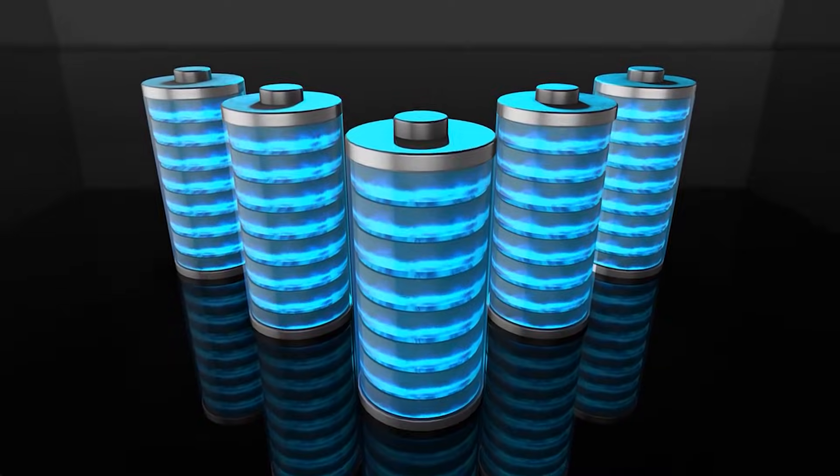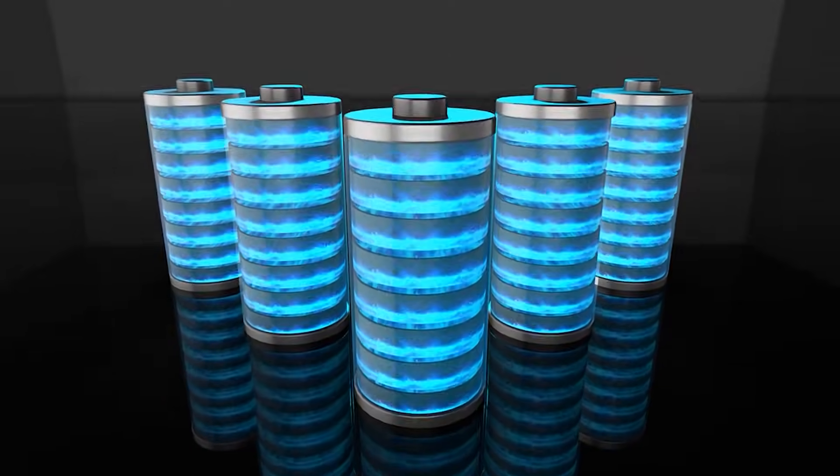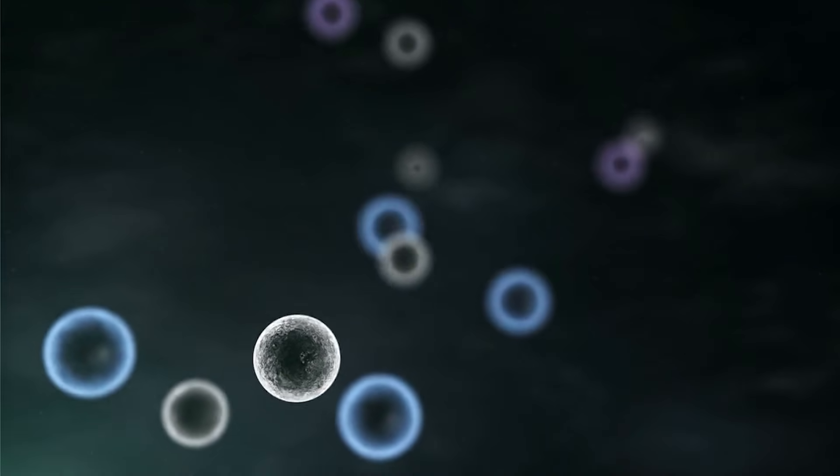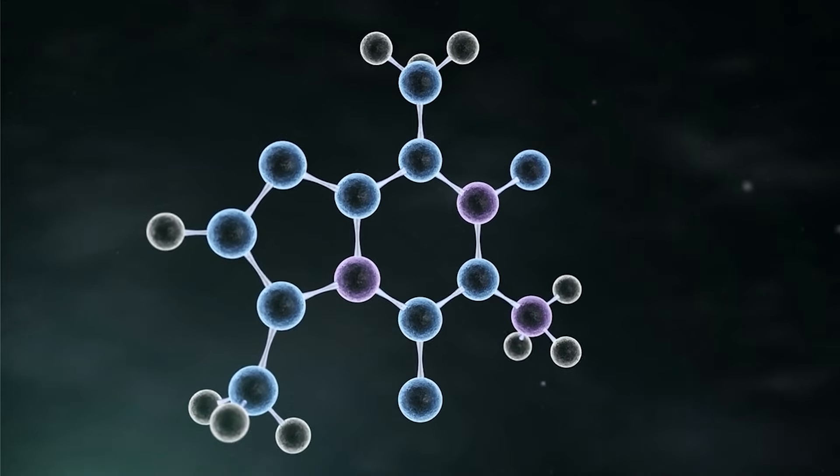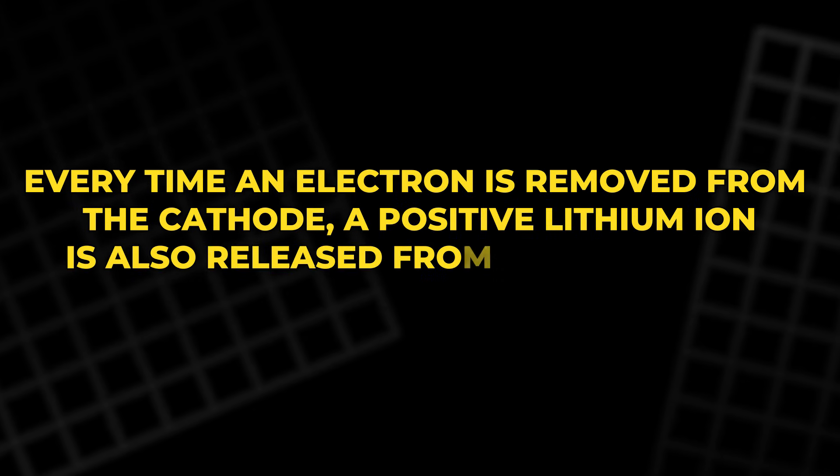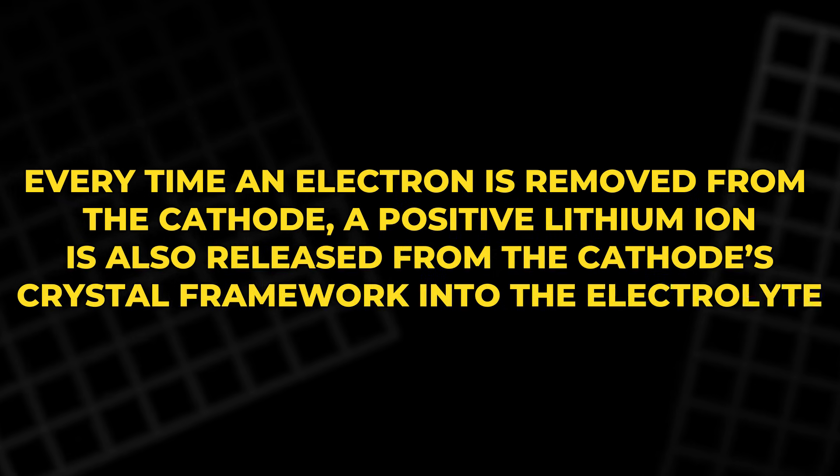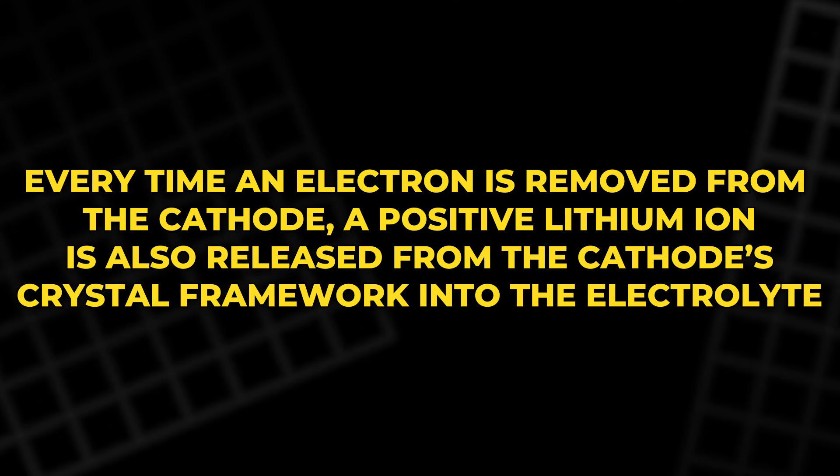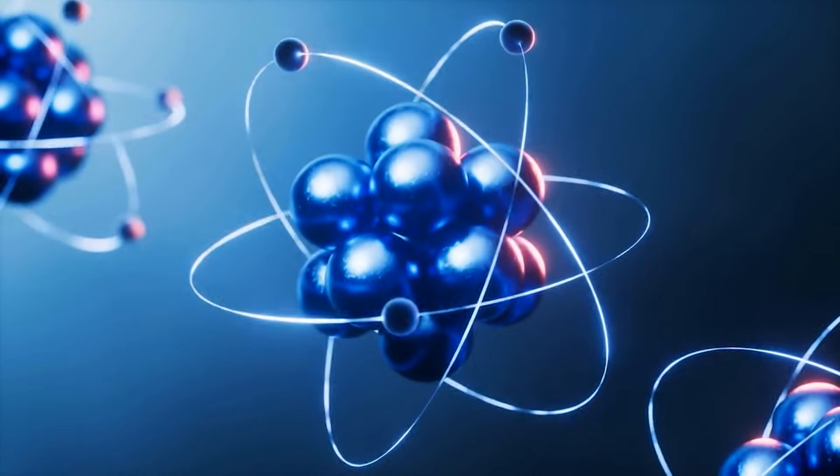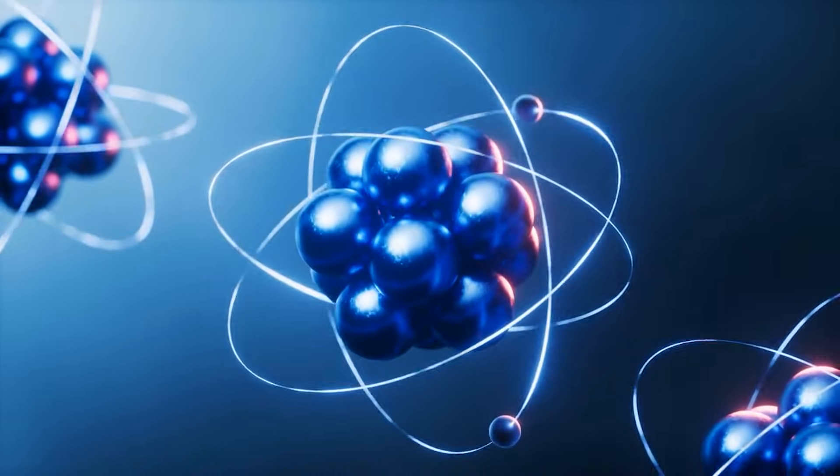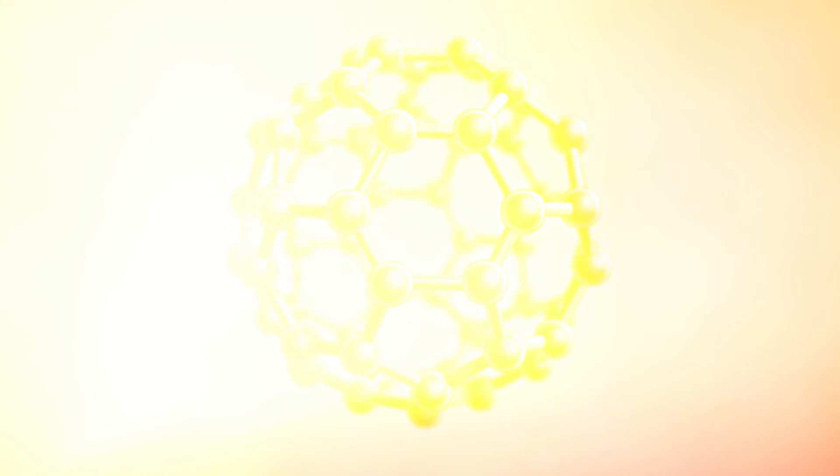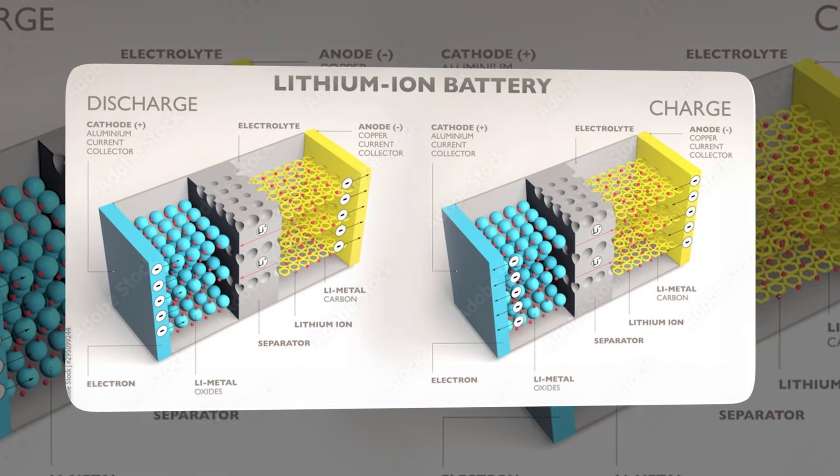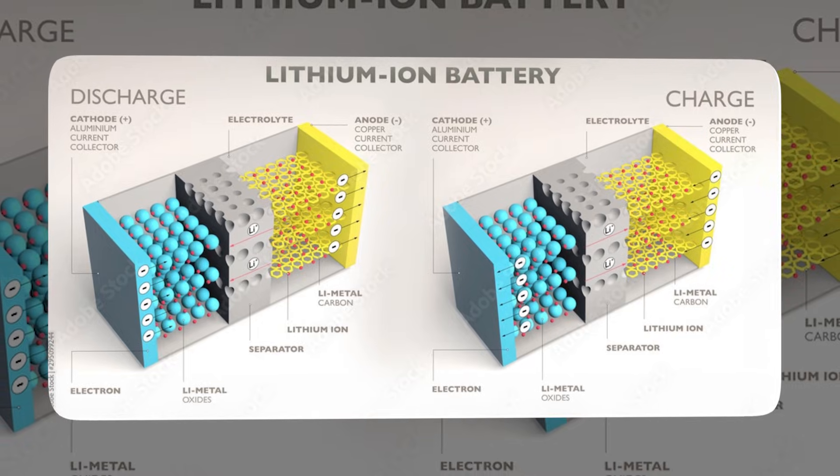The missing detail is that the battery must stay electrically neutral in bulk. If electrons move instantly, but ions lag, charge would pile up, and the reaction would choke. So, the cell uses local balancing acts. Every time an electron is removed from the cathode, a positive lithium ion is also released from the cathode's crystal framework into the electrolyte. Every time an electron arrives at the anode, the electrolyte near the anode must supply a positive ion to keep the liquid from becoming too negative. That means a cell is constantly juggling charge at interfaces, not just at the ends.